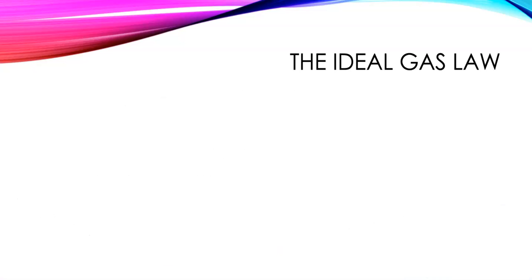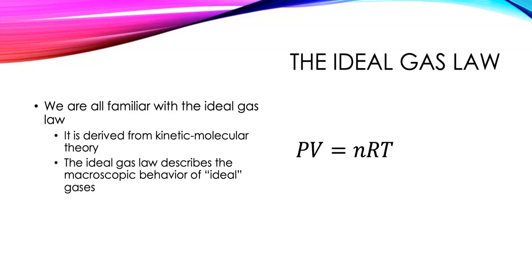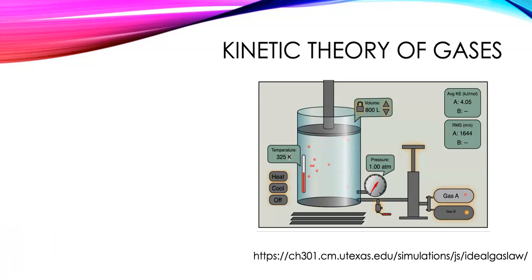Obviously, if we're talking about ideal gases, we want to talk about the ideal gas law, which we're all familiar with. We've done lots of calculations with it — PV equals nRT. This is derived from kinetic theory, and it allows us to predict and explain the macroscopic behavior of an ideal gas. So we need to talk about what we mean by an ideal gas, and we need to revisit kinetic theory of gases.